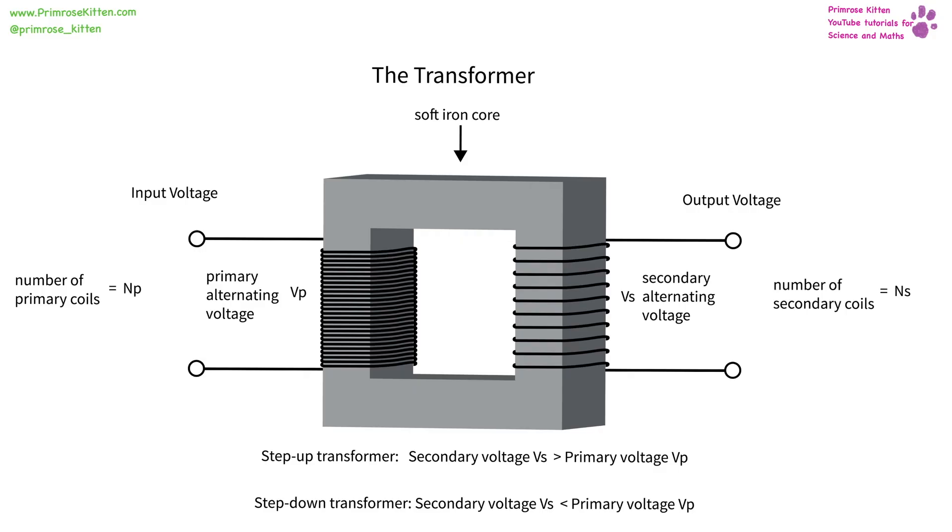If we have a step up transformer, the secondary voltage is going to be greater than the primary voltage, so the voltage coming out is going to be greater than the voltage going in. If we have a step down transformer, the secondary voltage is going to be less than the primary voltage, so the voltage coming out is going to be less than the voltage going in.